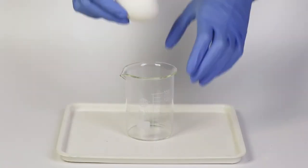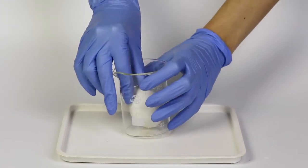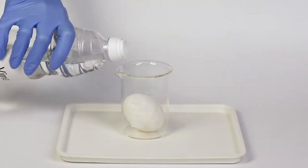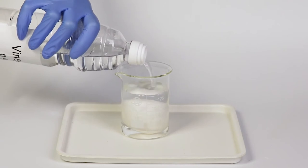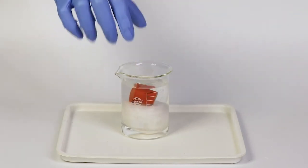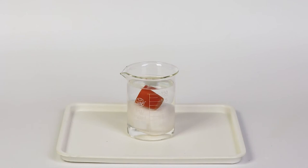Take a beaker and carefully put an egg into it. Cover the egg with the 5 to 10% vinegar solution. Put a rubber stopper onto the egg to prevent it from floating. Wait for 12 hours.